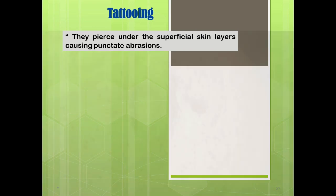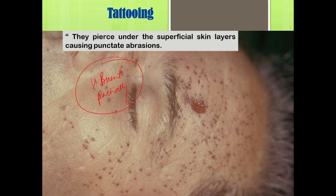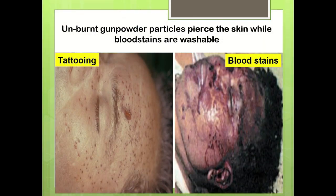Tattooing is caused by unburnt or partially burnt powders, which create punctate abrasions in the superficial layers of skin. To differentiate tattooing from blood stains: blood stains can be easily washed away, but tattooing is in the form of superficial punctate abrasions, so it cannot be cleaned with cotton or wet gauze.